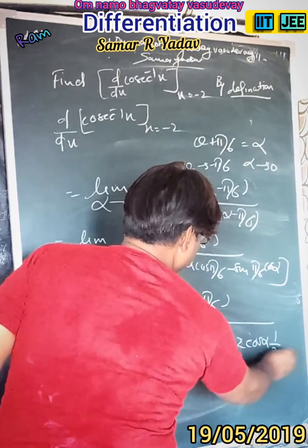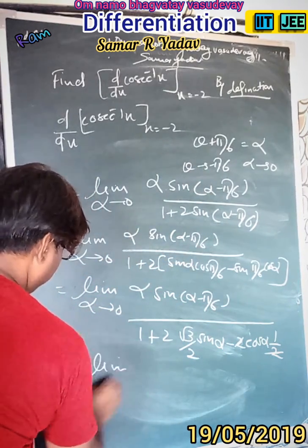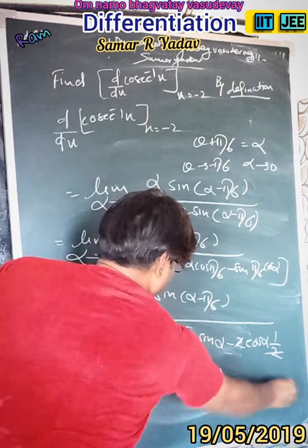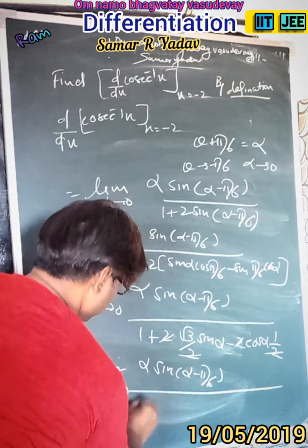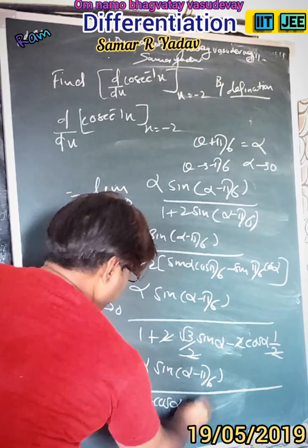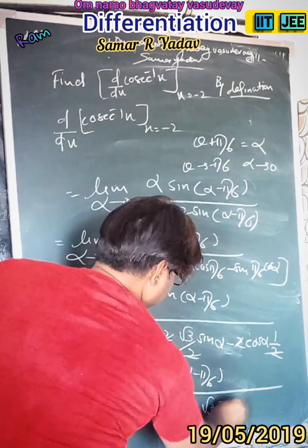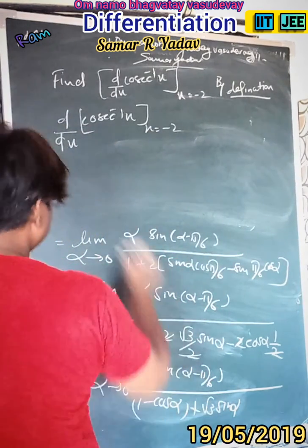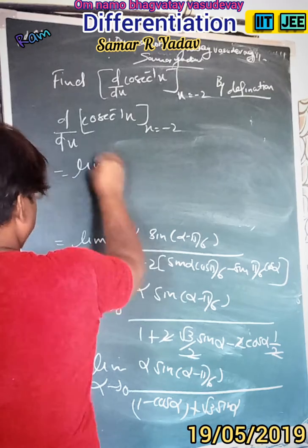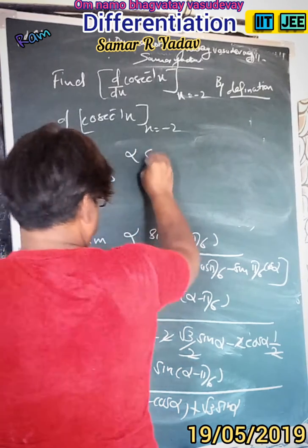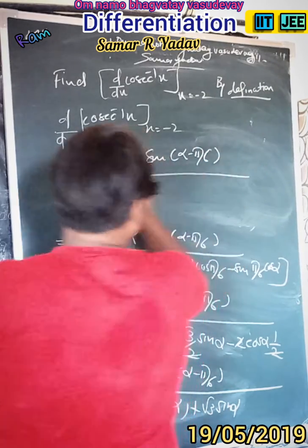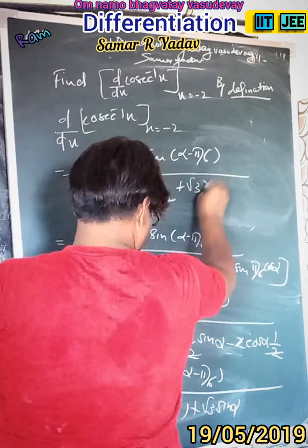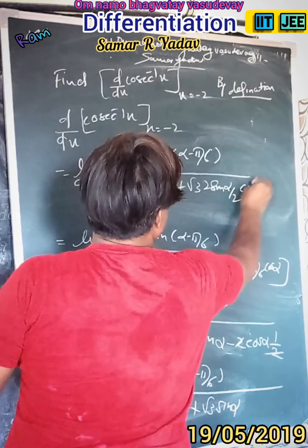So we can write limit α tends to 0 of α·sin(α - 5π/6) upon [2 + 2sin(α - 5π/6)], which is 2 times [1 - cos(α)] plus √3·sin(α). Now again using the formula: the denominator becomes 2sin²(α/2) + 1, and further 2sin(α/2)cos(α/2)·√3, simplifying with the half-angle identities.